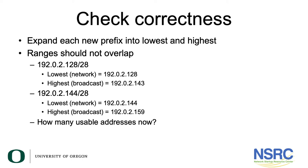So how many usable addresses do you have now from the two /28 prefixes? Remember that the original /27 prefix had 32 IP addresses, out of which two were unusable — the network and the broadcast address — making it 30 usable IP addresses. However, if you have two /28 prefixes, you're now going to end up with two network addresses and two broadcast addresses. So the total number of usable IP addresses will now be 32 minus 4, which is going to be 28 IP addresses.